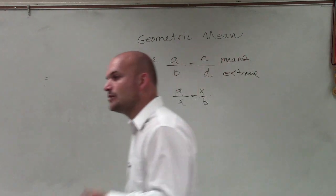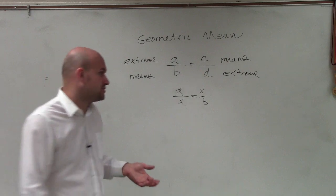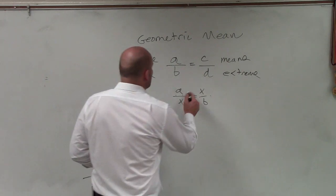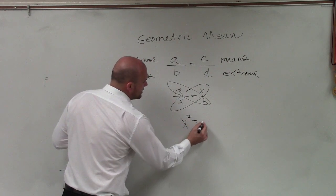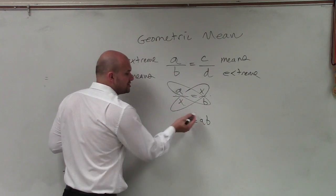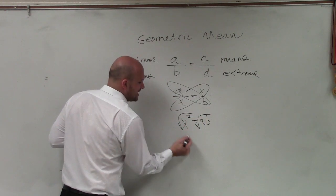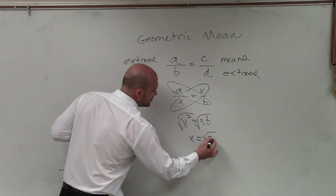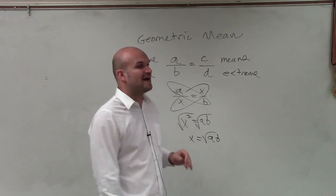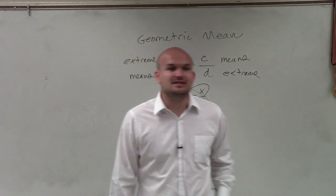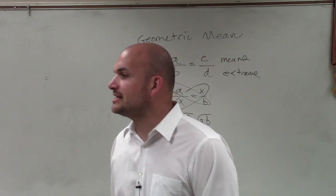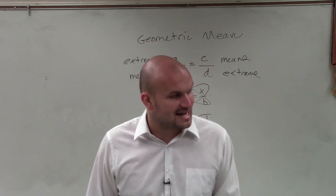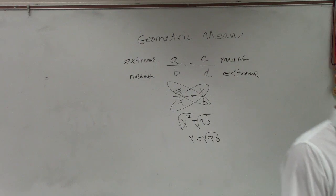So when our means are the same, that's exactly what we're trying to do for solving the geometric mean. When I apply cross multiplication, what I have is x squared equals a times b. To solve for x, I take the square root of both sides, and I get x equals the square root of a times b. So if I ask you to find the geometric mean between two values, take the square root of their product — that's your geometric mean. I'll give you guys an example of those in just a second.